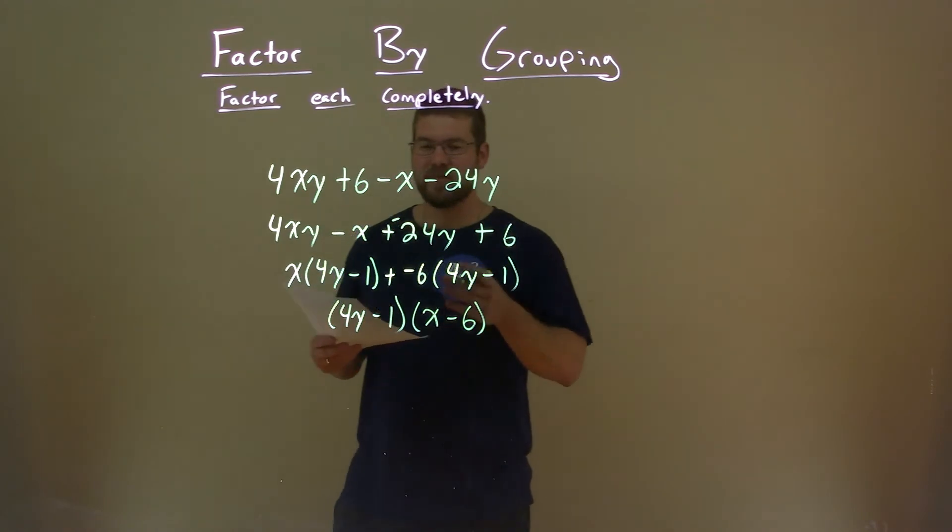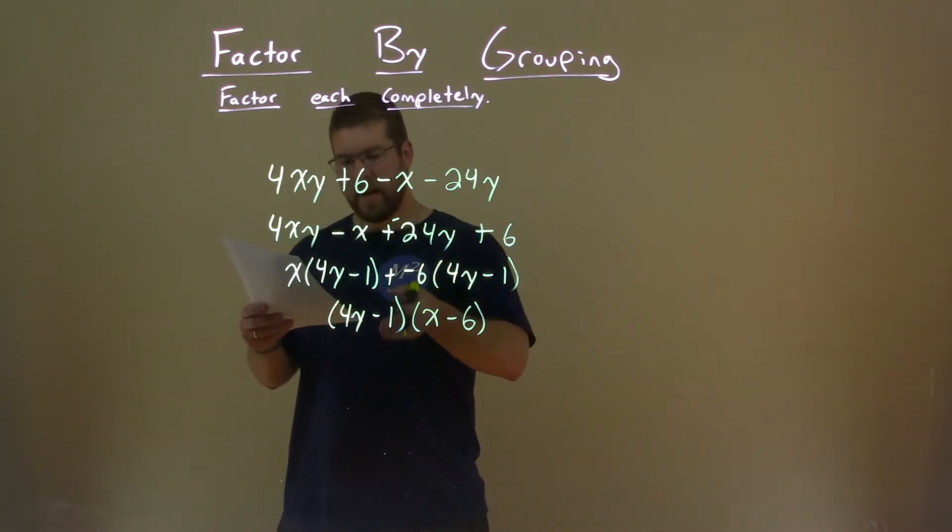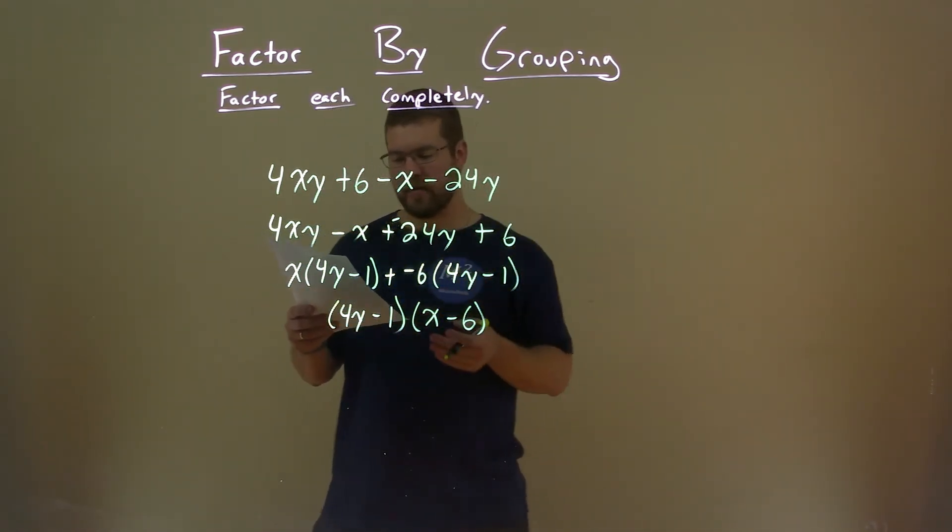And we now actually have our final answer, 4y minus 1 times x minus 6.